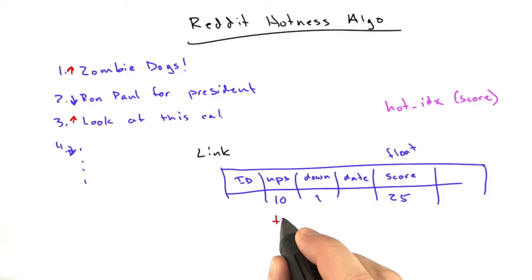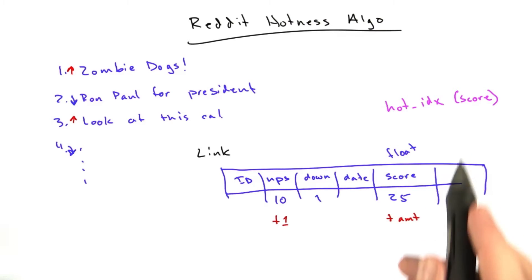So every time, for example, you add one upvote, we actually increment the score by some other amount. And this other amount is computed through this hot function, and that hot function looks something like this.